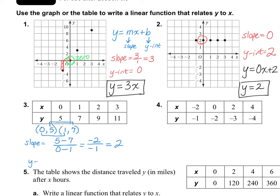Now let's find our Y-intercept. Remember, the Y-intercept is always found where 0 is your X. So if you look at all of these points, 0 as an X is here, which means that number is my Y-intercept. So 0, 5 is my Y-intercept, meaning my Y-intercept is 5. Let's go ahead and write our answer: Y equals 2X plus 5. That's the answer for number 3.